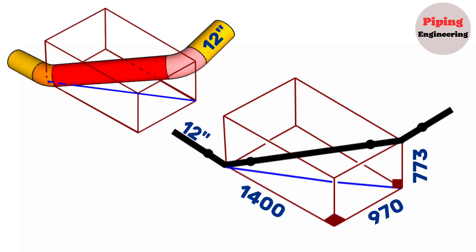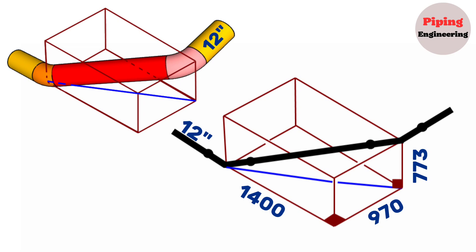As you can see, the 12-inch pipeline, which is in the south direction, first goes 1400mm south after the first elbow and then turns 970mm east, then goes up to a height of 773mm and continues east again after the second elbow. To help understand more easily the extent of the pipeline rotation, the rotating part is shown inside a parallelogram. The first elbow is located in the lower right corner and the second elbow is in the upper left corner.